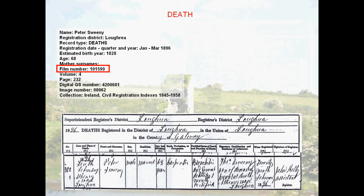Death records can be found. I have the civil registration index in the upper left corner with the film number. When I order the film I get the full page of Peter Sweeney's death in 1896 in Loughrea. A snippet is shown in the bottom image: he is listed as married, 68 years old — though I believe he was closer to 65 — and a carpenter. He died of what looks like bronchitis among other things. The person who did the reporting is his son Thomas Sweeney, listed as son of the deceased, present at death, on Athenry Road, Loughrea. Pay attention to who did the reporting when they visited the registrar's office.